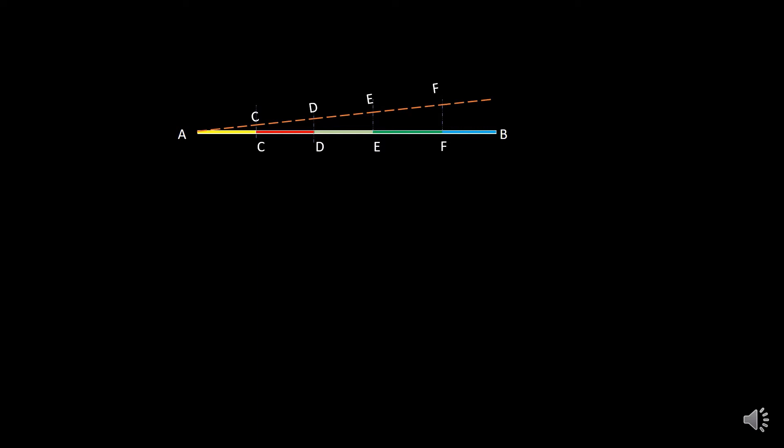Here comes the importance of the hold-to-part method. In hold to part method, with the same AB line divided into AC, CD, DE, EF, and FB, the measurement is carried out in a different order: I start measuring AC, then BF, then CD, then EF, and then DE. So from the outer ends of the line, we are moving inwards. This is the concept of hold-to-part method in surveying.